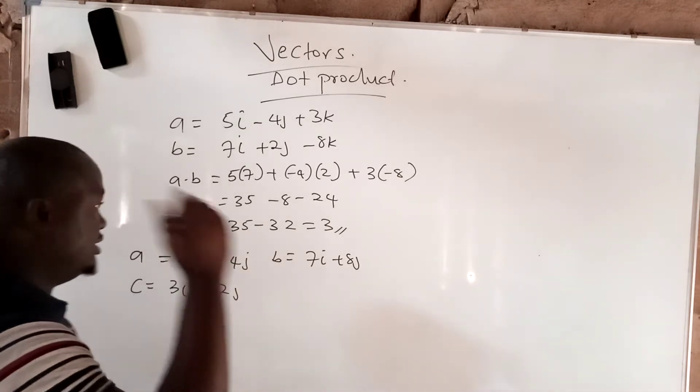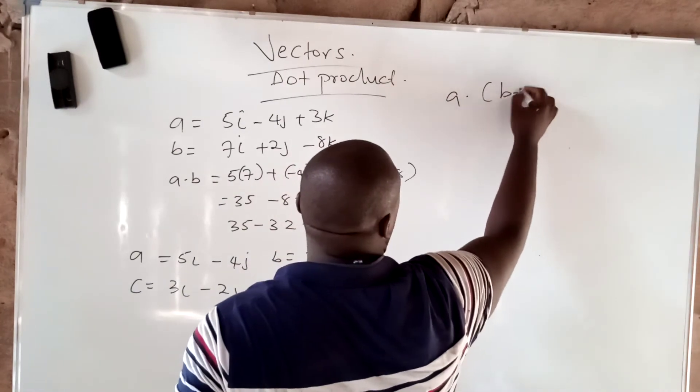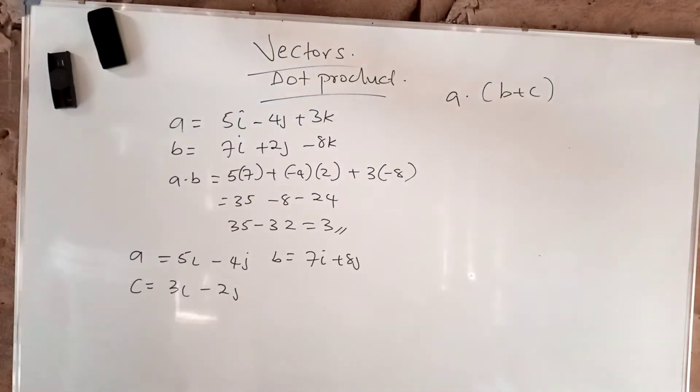And you have c equals 3i minus 2j. Now I ask you to calculate a dot (b plus c). So practically, first you need to calculate b plus c.